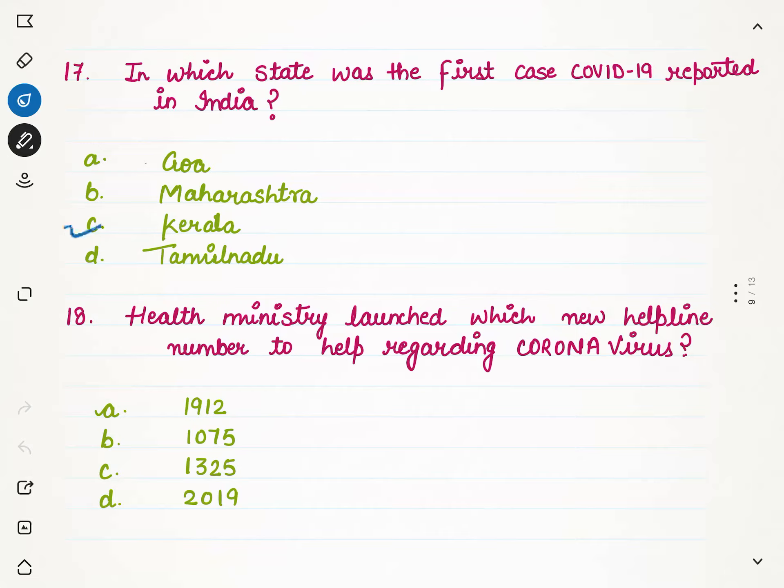The health ministry launched which new helpline number for coronavirus? If you have any problem or coronavirus-related complaint, on which helpline number can you give information? Our options are given, but option B is the correct option — 1075 is the new helpline number.